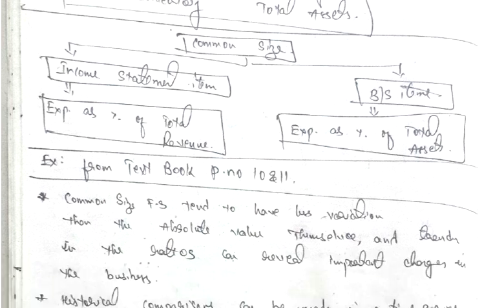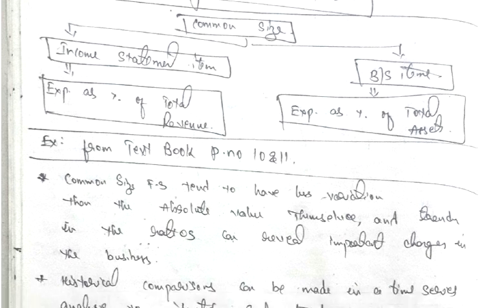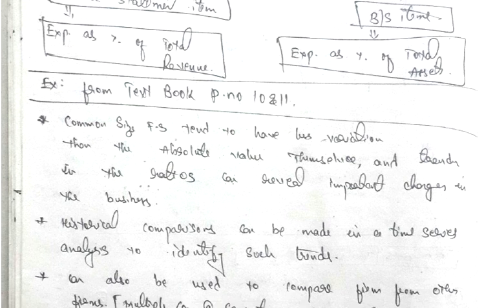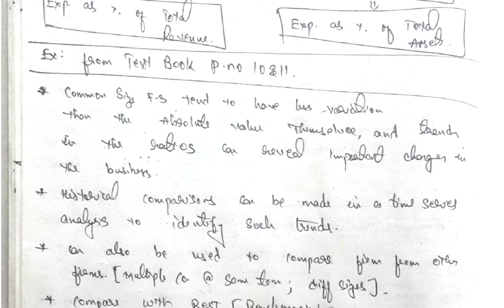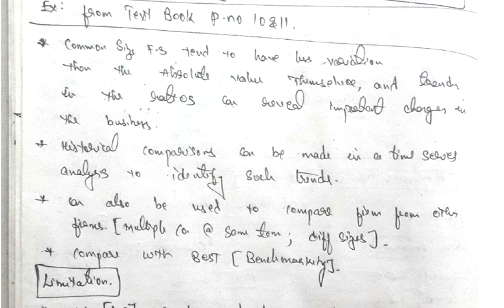Common size divided into two, income statement items and balance sheet items. If it is income statement item, expenses as percent of total revenue to be taken. Balance sheet item, expenses as a percent of total assets to be taken. There are examples given in textbook page number 101. Please go through it. Common size financial statement tends to have less variations than the absolute value themselves and trends in the ratio can reveal important changes in the business. Historical comparison can be made in a time series analysis to identify such trends.